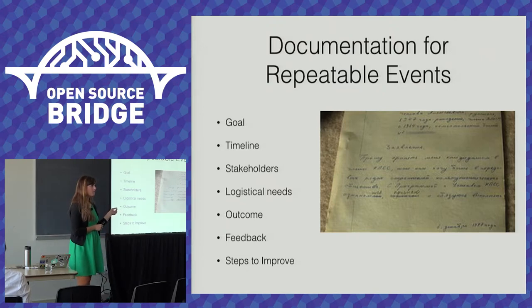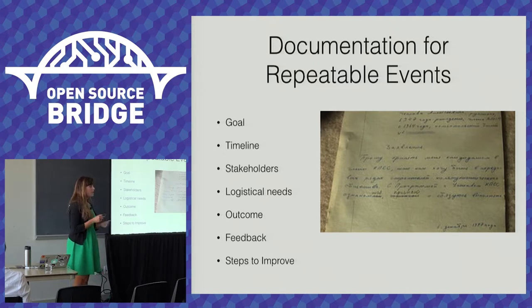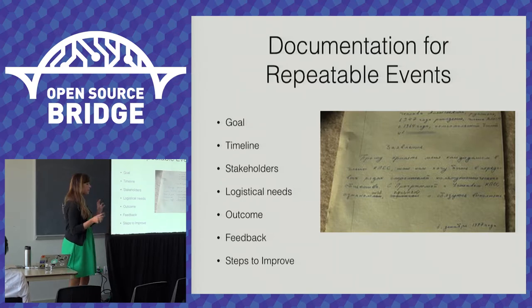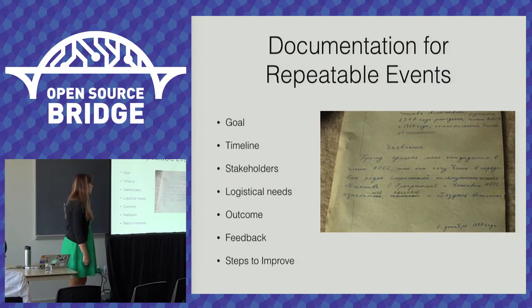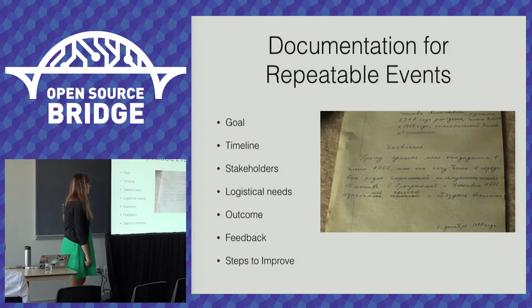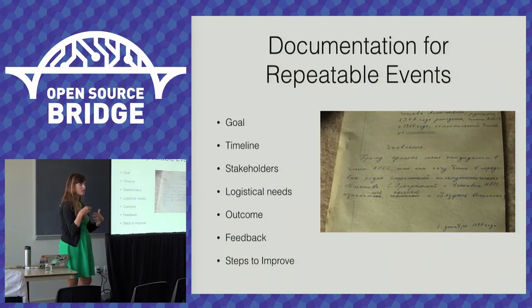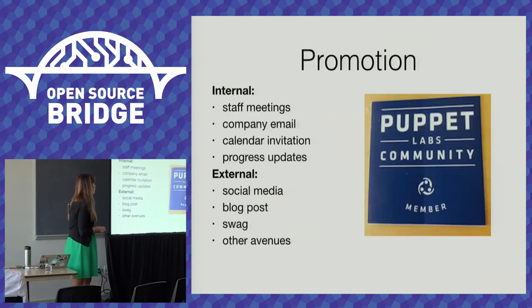After the event, I write what the outcome was, include feedback and survey results, and then take it a step further — I write down what I'm going to do next time and how I'm going to improve it. That way when I open it six months later it's all there. It's also really helpful when talking about events to others in the company, and when you have a planning committee meeting where people don't take notes and don't remember what was decided.